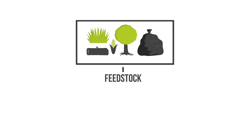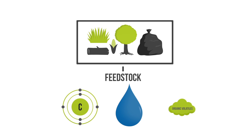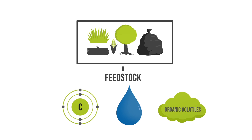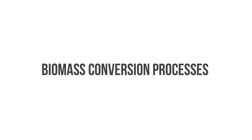Different feedstocks will have different physical compositions, but generally all feedstocks include varying amounts of carbon, water, and organic volatiles. For energy production, a feedstock must be converted using one of many processes.